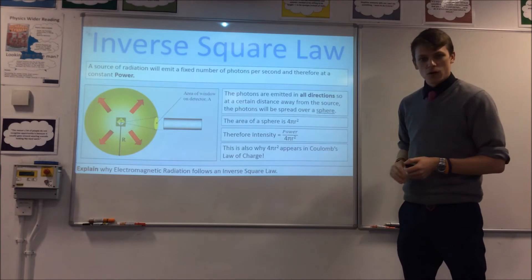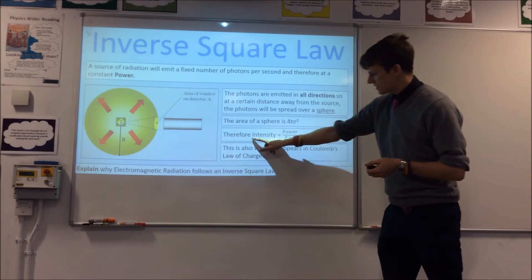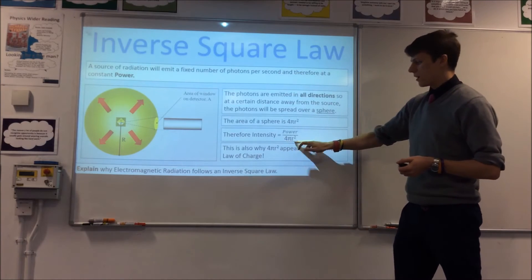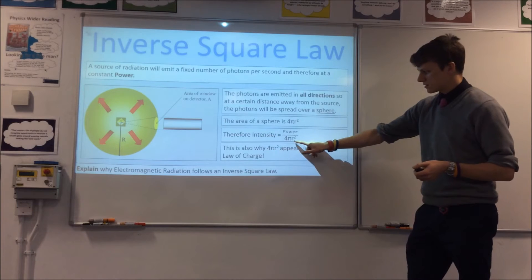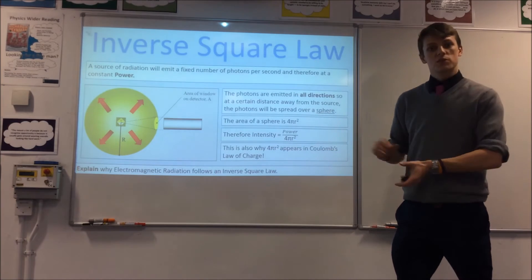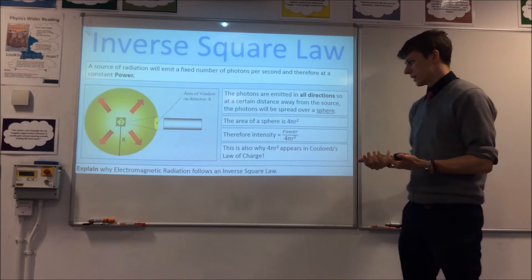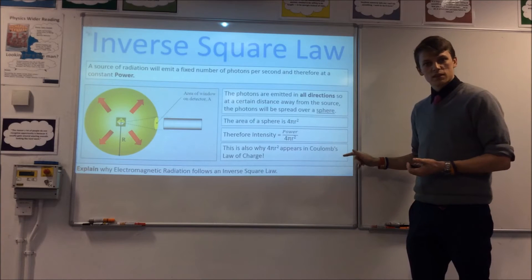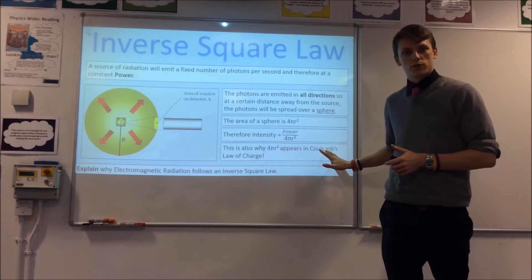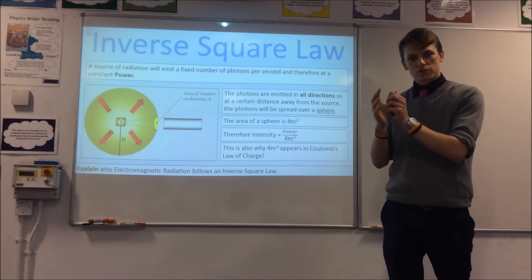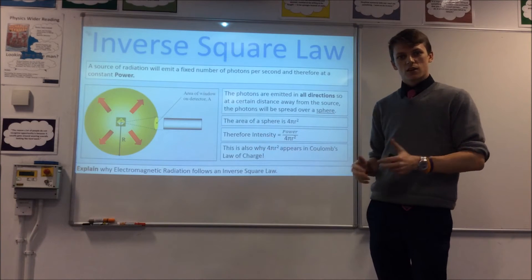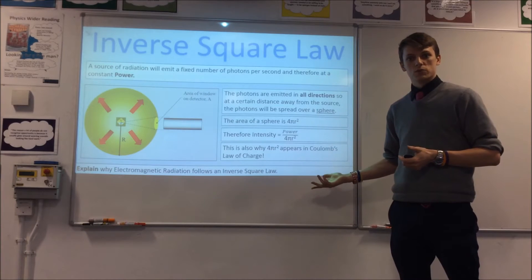Substituting that in for area, we can see that intensity equals power — which is constant — divided by 4πr². So intensity is directly proportional to 1/r², where r is the radius of the sphere, which is also the distance you are from the source. Those who've studied the electromagnetic fields part of the course will recognise 4πr² from Coulomb's law — the same reasoning applies because field lines spread over a sphere, which is why field strength also follows an inverse square law.